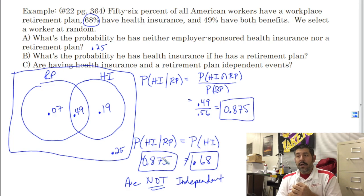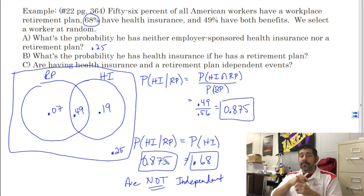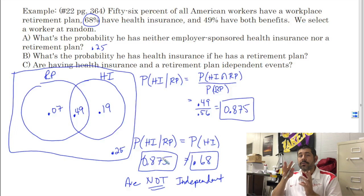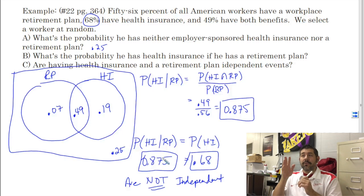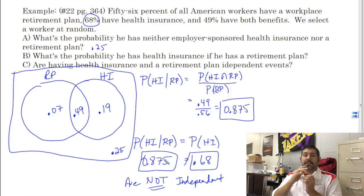Alright, so that's it. That is an example of how we would determine if two events are independent using our formula for independence using conditional probabilities.